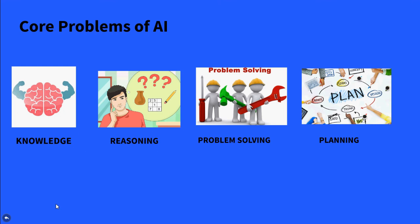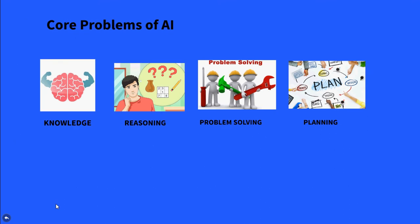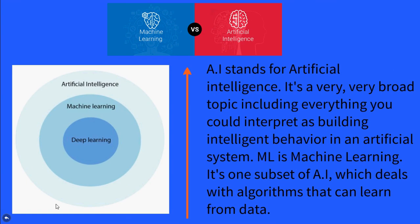Now let's have a look at the differences between machine learning and artificial intelligence. AI stands for artificial intelligence. It's a very broad topic including everything we could interpret as building intelligent behavior in an artificial system. Machine learning is one subset of AI which deals with algorithms that can learn from data.